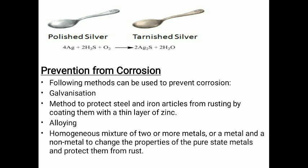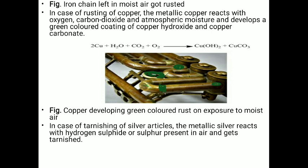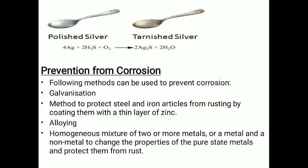For prevention from corrosion: if you apply any kind of gel, oil, or grease, the metal surface will not come in contact with air and water. The first method is galvanization — a method to protect steel and iron from rusting by coating them with a thin layer of zinc. This coating of zinc is called galvanization.